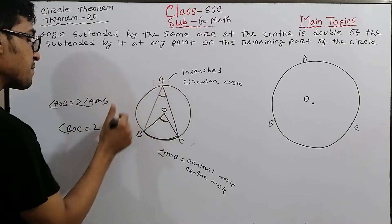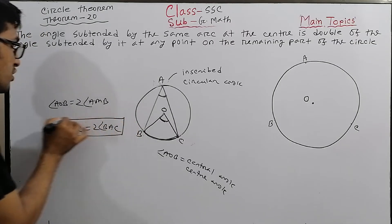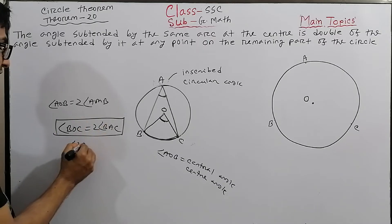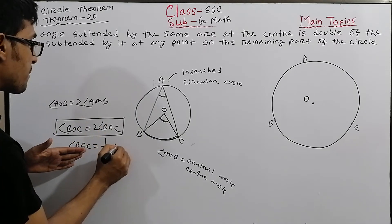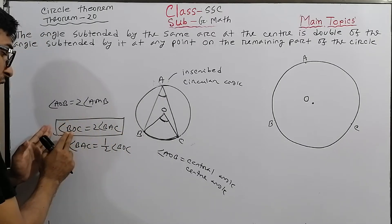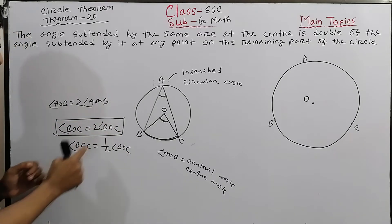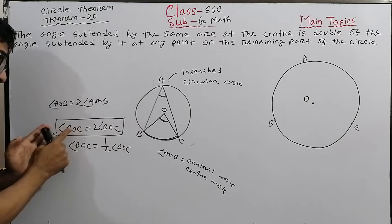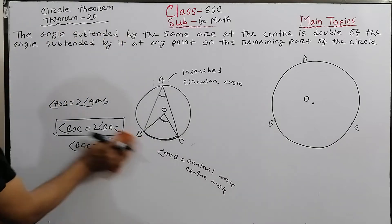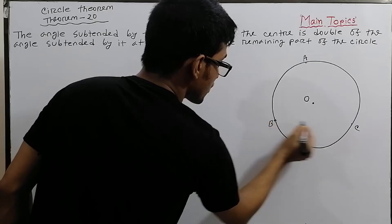The inscribed angle BSC equals half the central angle BOC, or equivalently, BOC equals double BSC. This is the key result. The proof is very important — we need to follow it carefully. Let us now set up the proof for this theorem.